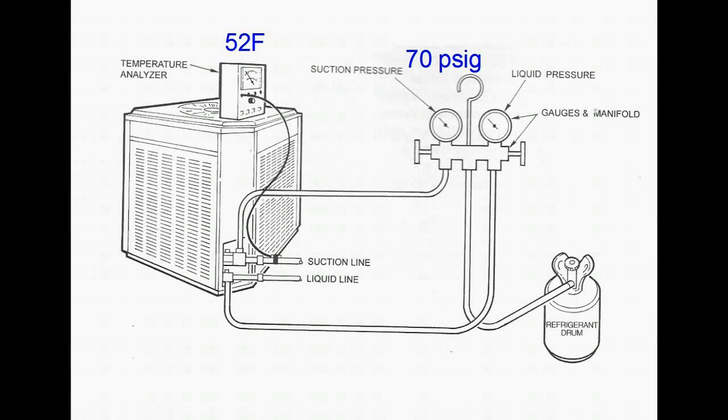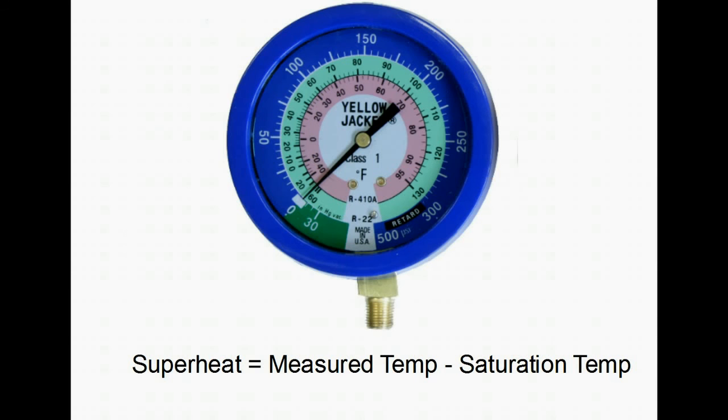So the first thing you want to do is convert that 70 PSIG, which is right here, to saturation temperature. And that happens to be 40 degrees Fahrenheit.